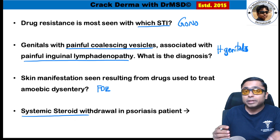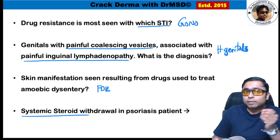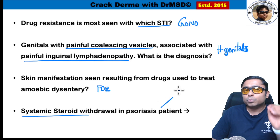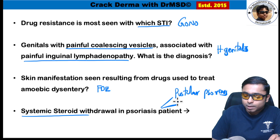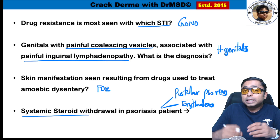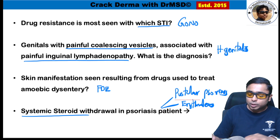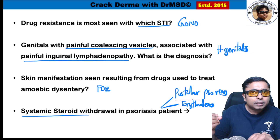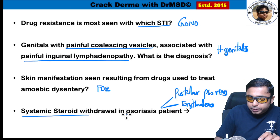Systemic steroid withdrawal in a psoriatic patient produces two life-threatening conditions. First is pustular psoriasis, where there are sheets of pus involving almost the entire body. The second is erythrodermic psoriasis, associated with more than 90% of the body surface area becoming red and scaling. These are two important adverse effects of systemic steroid withdrawal in psoriasis patients.